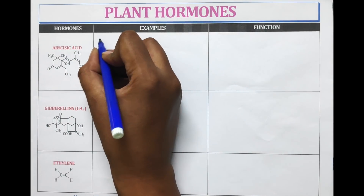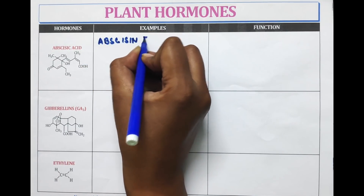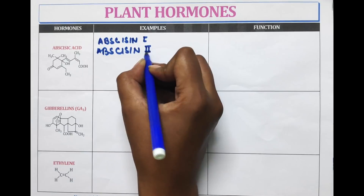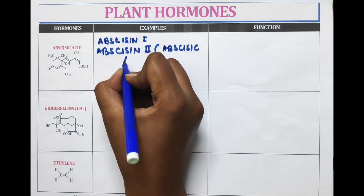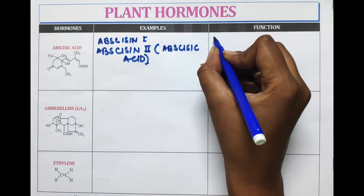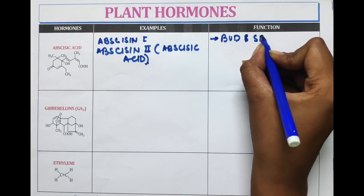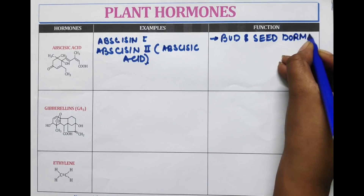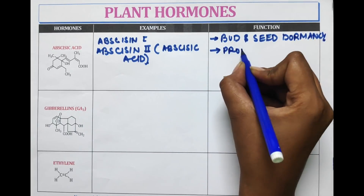The third hormone is abscisic acid. Abscisic acid is of two types: abscisin-1 and abscisin-2. Abscisin-2 is also known as abscisic acid. Its functions include promoting bud and seed dormancy, and promoting leaf senescence.